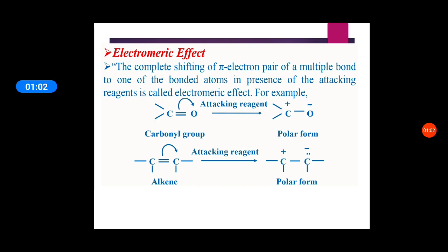Usually in the carbonyl group, the electrons are shifted to the more electronegative atom, that is to oxygen. So it gets a negative charge and carbon acquires positive charge. So here the carbonyl group, which initially is non-polar, in presence of attacking reagent becomes polar form.